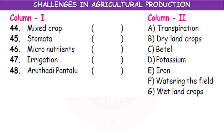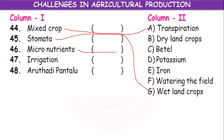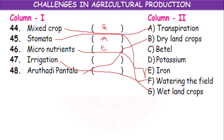Mixed crops can be grown with wetland crops like rice. Stomata help in the process of transpiration. Iron is a micronutrient. Irrigation means the watering of the field. Dryland crops are those grown without irrigation. The matching answers are G, A, E, F, and B.